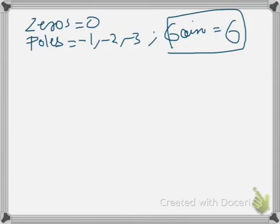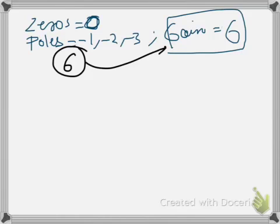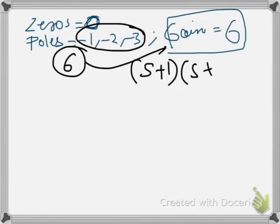When you form a transfer function you multiply it with the gain. Since the zero is zero, the numerator of the transfer function is 6 — you write down the gain in that case. We have the poles as minus 1, minus 2, and minus 3, so the denominator is going to be (s+1)(s+2)(s+3).